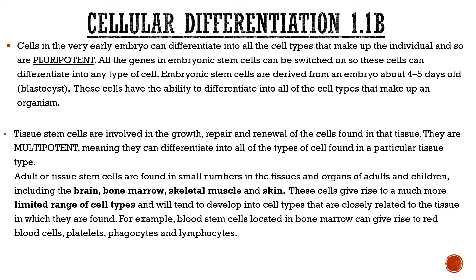For example, blood stem cells in bone marrow can produce white blood cells, red blood cells, and platelets, but they cannot create nerve cells because they're too specific. So adult stem cells are multipotent. As a disclaimer: adult stem cells can't reverse backwards naturally, but there are induced pluripotent stem cells, which allow multipotent stem cells to become pluripotent — though that's beyond our scope today.